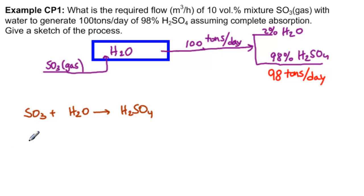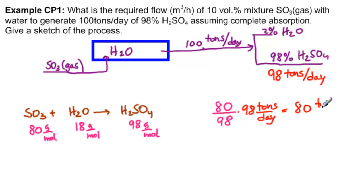The molar mass of SO3 is 80 grams per mole. The molar mass of H2O is 18 grams per mole. And the molar mass of H2SO4 is 98 grams per mole. So the ratio of SO3 to H2SO4 is 80 over 98, and then we multiply that times 98 tons per day and we get 80 tons per day.